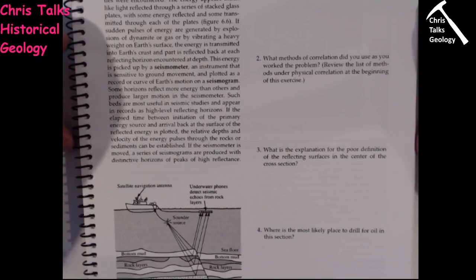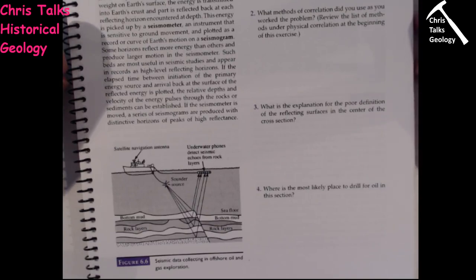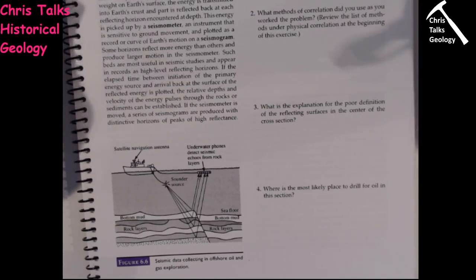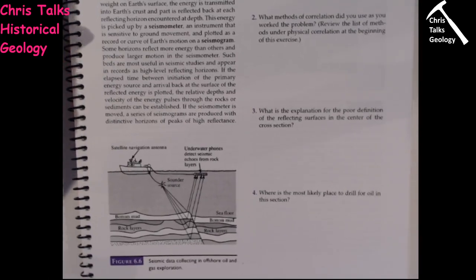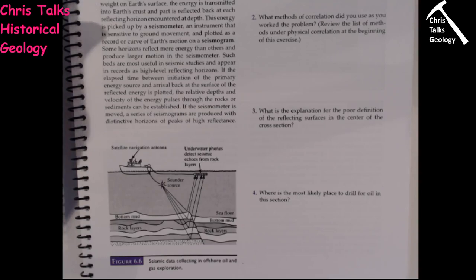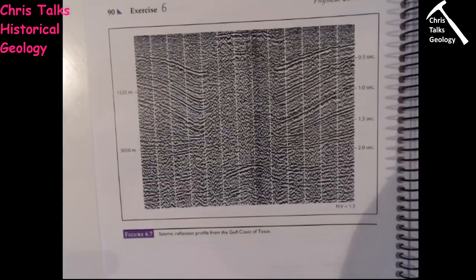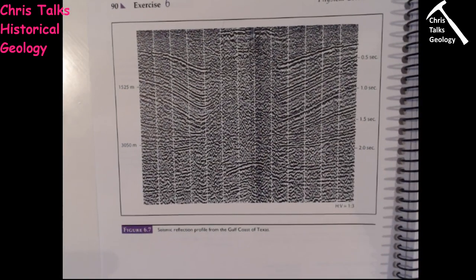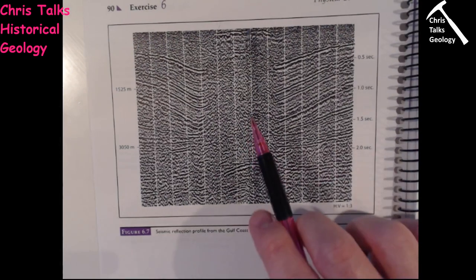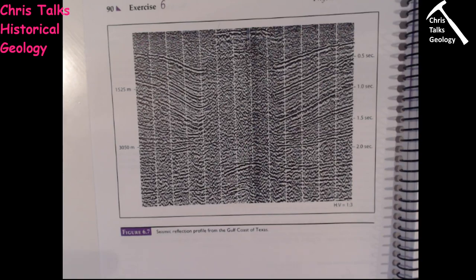The final question: where is the most likely place to drill for oil in this section? Oil forms in mudstones, naturally rises, and goes into a porous reservoir rock, where it's stopped from rising further by a seal. We want to find somewhere on this diagram where oil could have risen into a reservoir rock and be trapped by something. Salt is a very, very good seal — so once you've worked out what the feature in the centre is, it should give you some idea about where to consider drilling for oil.